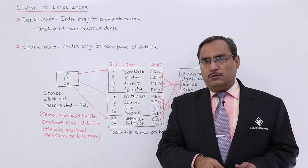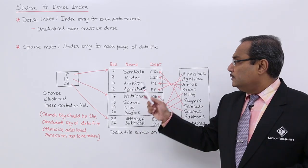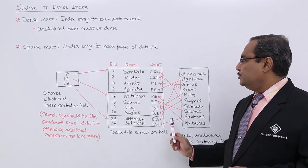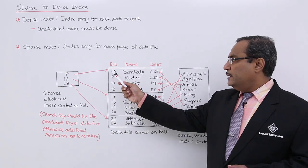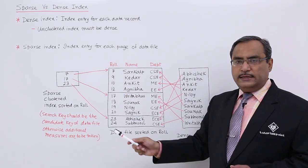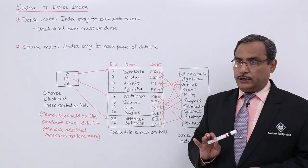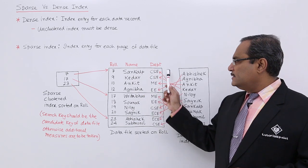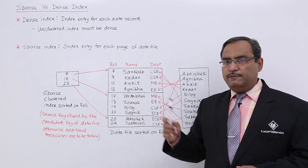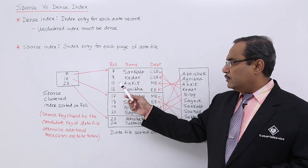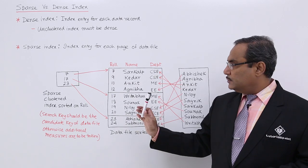For better clarity, let us look at the diagram and discuss on that. This is a data file which is sorted on roll. It is having roll numbers 7, 9, 10, 12 — they may not be continuous but they are sorted. This is a page, and each page can hold a maximum of 4 records — 4 records here, 4 records here, and 4 or less than 4 records in the third page.